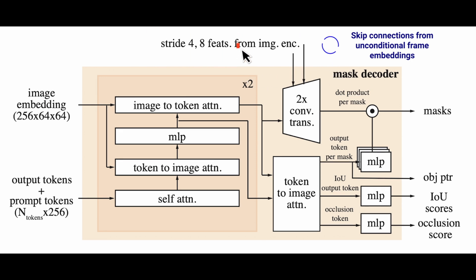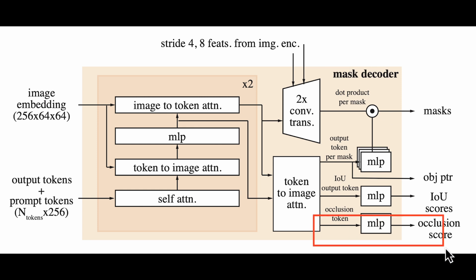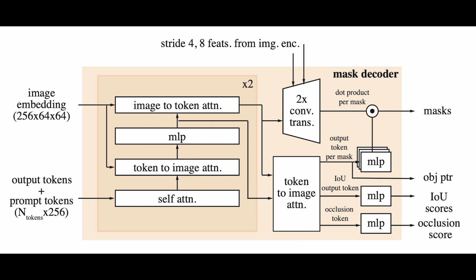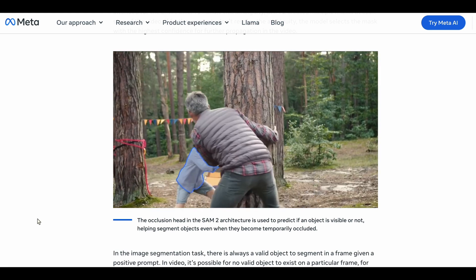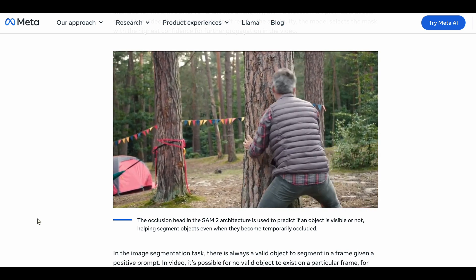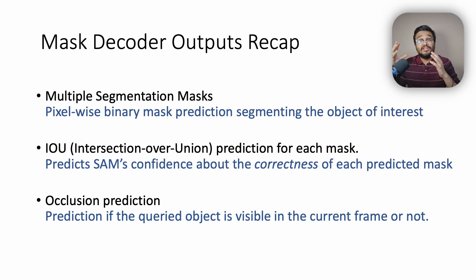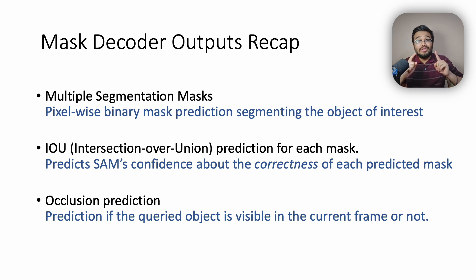The final major architectural addition in SAM2 is that, along with binary masks and IOU scores, the decoder also predicts an occlusion score. During a video, the queried object can get occluded by another object in the scene. The occlusion score predicts whether the queried object is present in the current frame. If any of the three predicted occlusion scores is close to zero, the model considers the object of interest likely occluded or absent. SAM2 generates an occlusion score for each of the three predicted masks, complementing the IOU confidence scores.